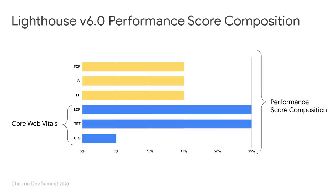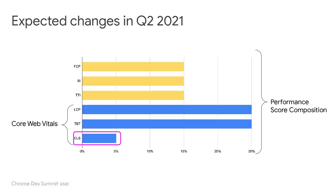This is the current Lighthouse performance score. The various metrics are weighted differently based on what we have found to be most important for a good user experience. Core Web Vitals, with one exception, are the most heavily weighted metrics in the Lighthouse performance score. So when you're optimizing against the Lighthouse score, you're setting yourself up for success with Core Web Vitals in the field. That one exception is the weighting of CLS, which is weighted less than the other metrics. When Lighthouse 6.0 came out, CLS was still a new metric.